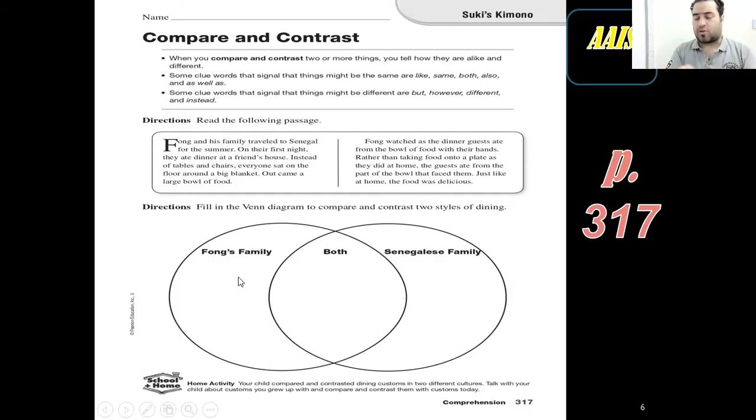So we have, in the story, we have two families, Fong's family and Singalese family, a family from Senegal. So we would like you to show how they are different. And of course, you know where to write this. It's here. Yes. In the both part here. This is where they are connected here.